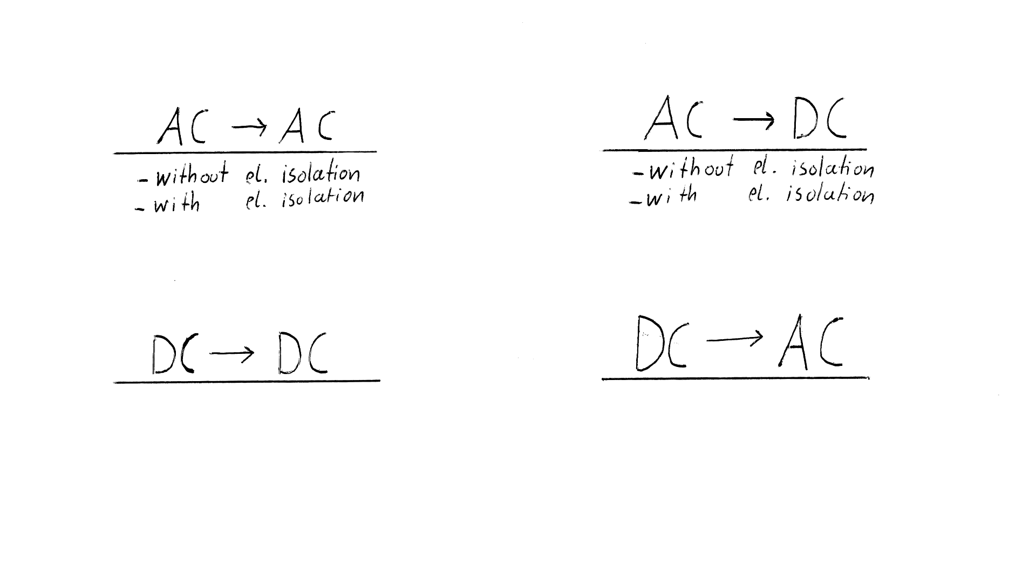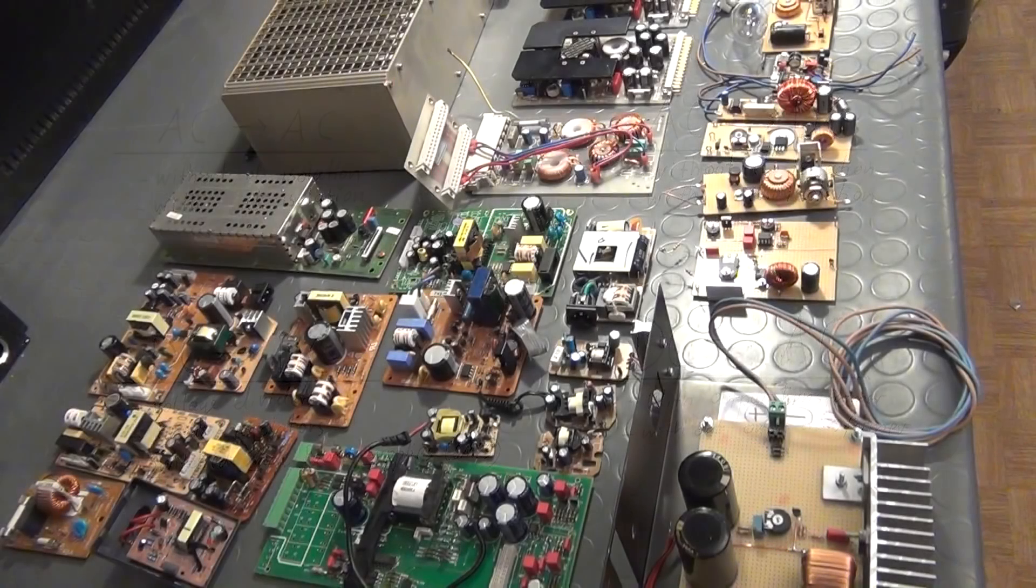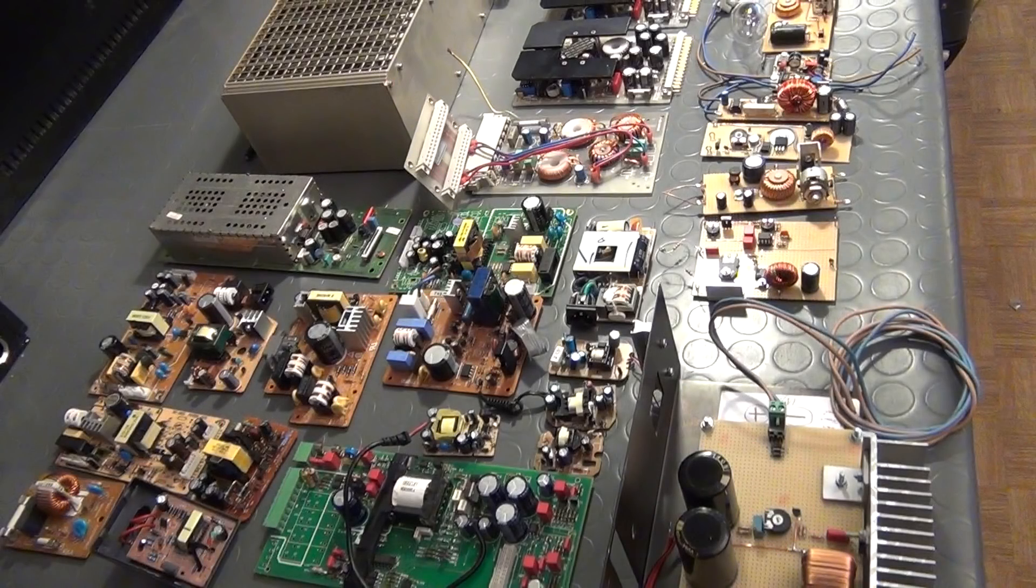Those were the most important circuit topologies for AC to AC and AC to DC conversion. In part 2 of this video tutorial, I will continue in this fashion to describe the basic topologies for DC to DC and DC to AC conversion which includes all types of switched mode power supplies. So if you liked this video, please watch the other parts too and please subscribe to my channel.